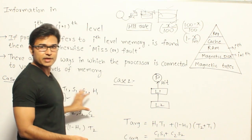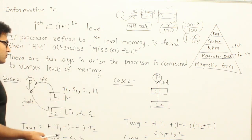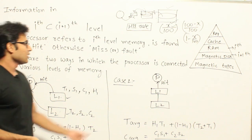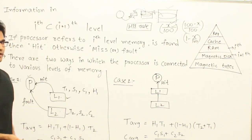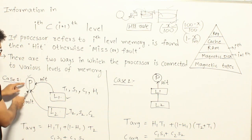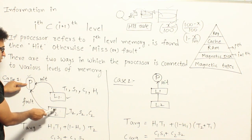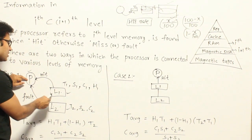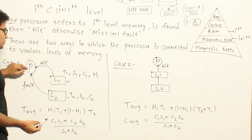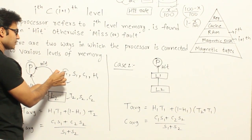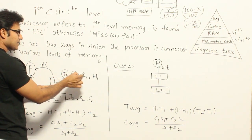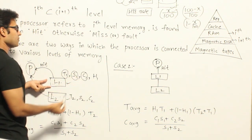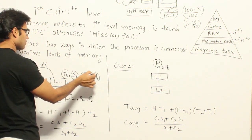Both connection methods are equally possible, and which way they are connected will be mentioned in the question. If nothing is mentioned, go for the sequential approach, as that is how we generally connect. Now, if both levels are directly connected to the processor, you will be searching for a word in L1 and L2 simultaneously. For level L1, assume the access time is T1, size is S1, cost per byte is C1, and hit rate is H1.